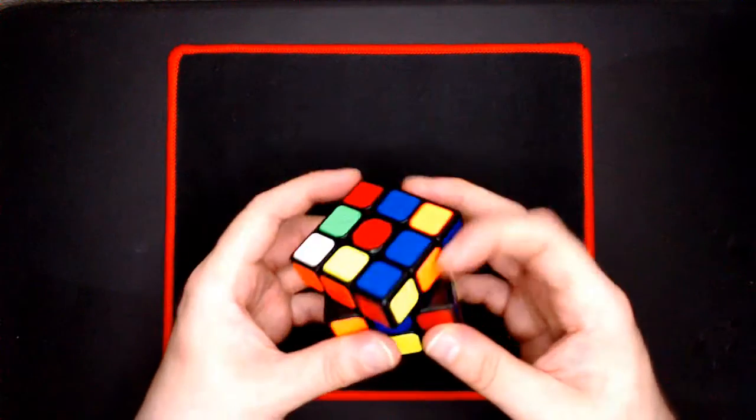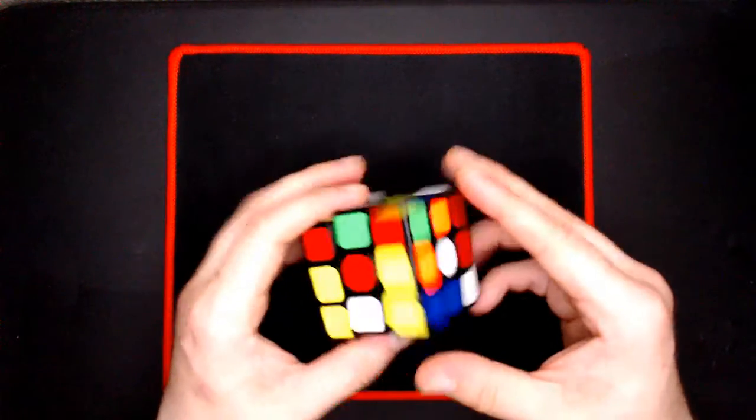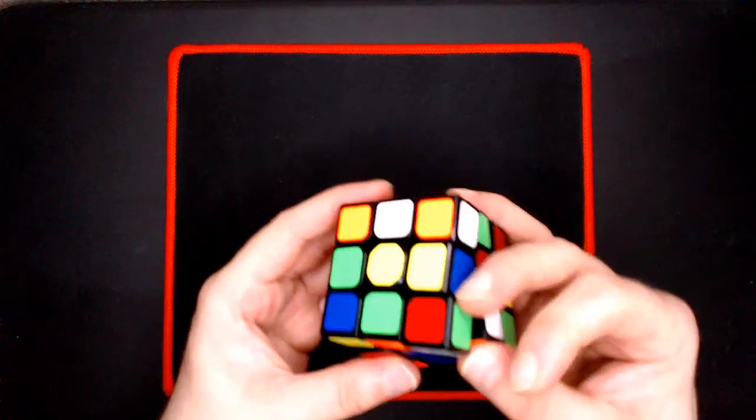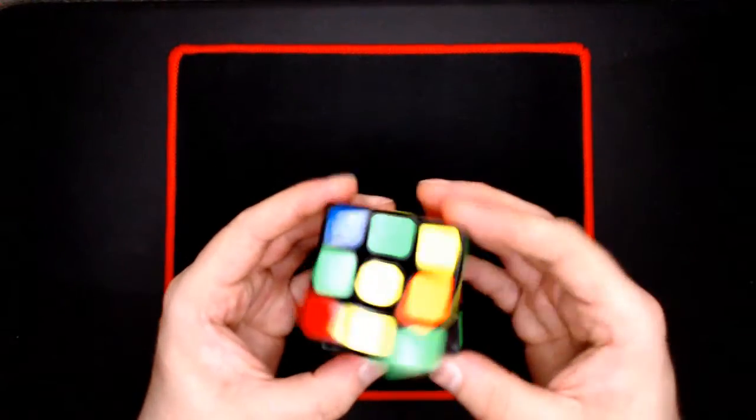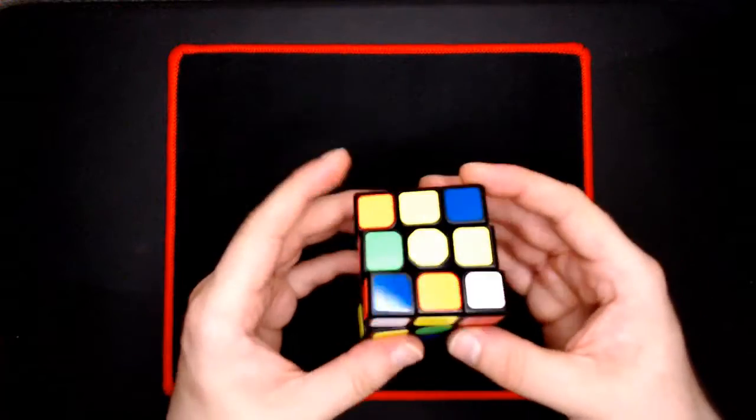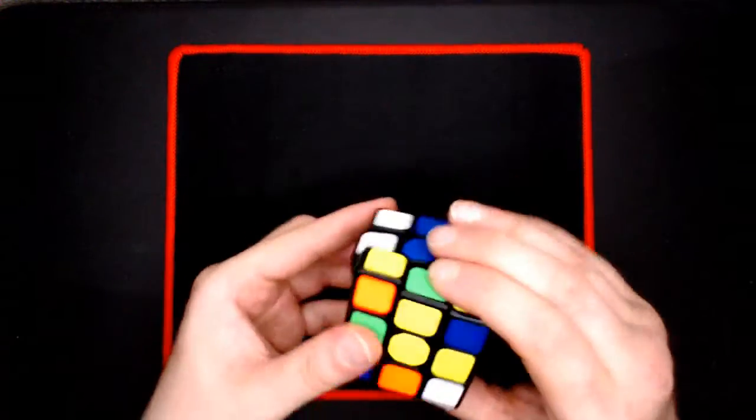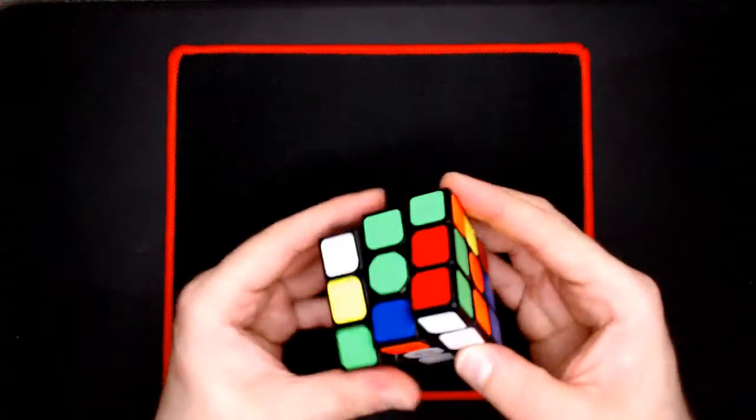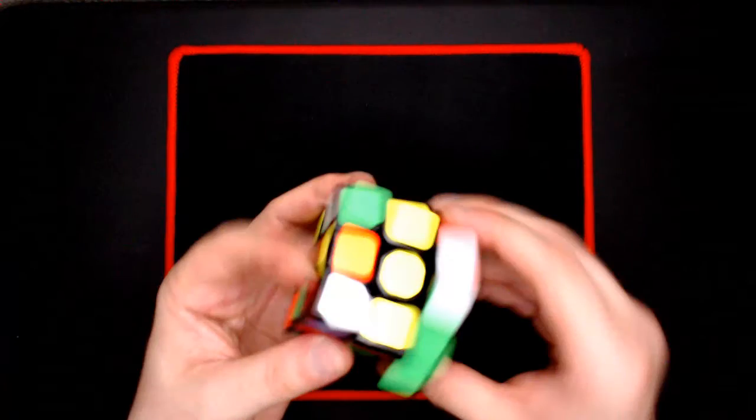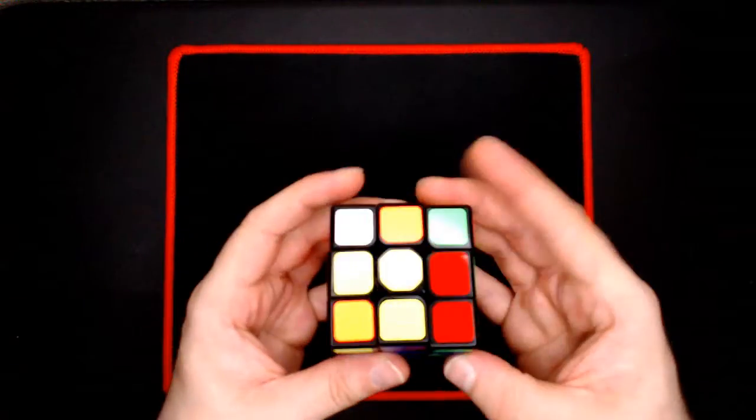I got this one and then the mini three by three which falls apart no matter what. This actually, I'm pretty impressed with this one. Non-magnetic cube, but that doesn't really matter to me. I prefer the magnets in it because it stabilizes it, can't talk, but this turns so good.